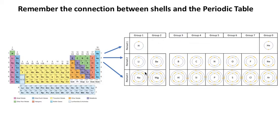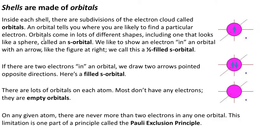I'll start off here to remind you of the connection between shells and the periodic table. Here's the periodic table, here's the first row which has one shell, second row has two shells, and so on. The next topic is that shells are actually made up of things called orbitals.